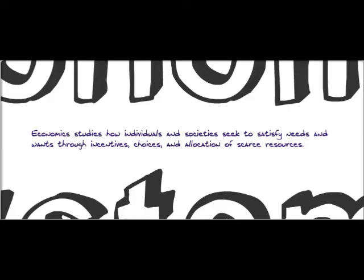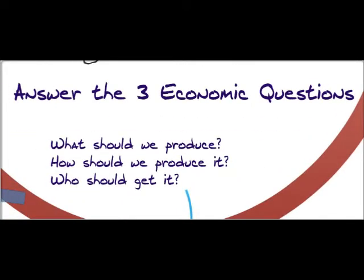We know that we have to make choices — we can't have it all. But how is a society going to choose what we do have and what we don't have? Well, for this they set up economic systems. These systems are set up specifically to answer the three economic questions: what should we produce, how should we produce it, and who should get it. There are different ways we can answer these questions, and it all depends on the economic goals and values.